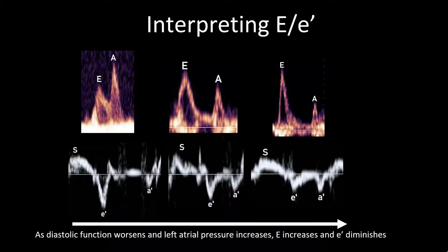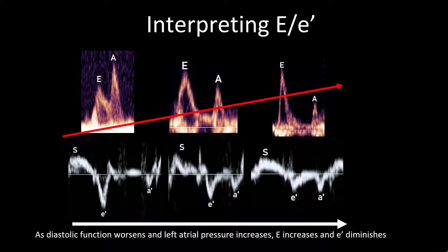Now that we've established E and E-prime, let's look at their relationship as it pertains to left atrial pressure. On top you have mitral valve inflow — E-velocity — and on the bottom you have tissue Doppler imaging of the mitral valve annulus — E-prime. As you move from left to right, this illustrates how E and E-prime velocity change as left atrial pressure increases. As LAP worsens, E-velocity increases as the pressure in the LA increases, leading to faster flow across the mitral valve in early diastole. Inversely, as LAP worsens, the movement of the myocardium at the mitral valve annulus decreases and E-prime gets smaller. Therefore, as LAP rises, the ratio of E over E-prime dramatically increases.